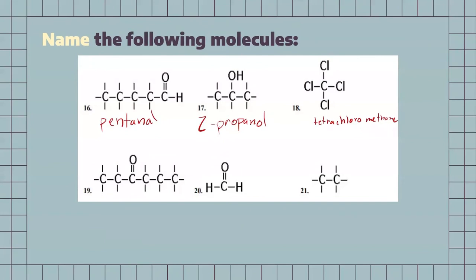Our next one, we have to count how many carbons we have: 1, 2, 3, 4, 5, 6. So, now we have to figure out on which carbon our ketone is on. So, it's going to be on 1, 2, 3. So, we're going to call this one 3-hexanone. Now, you might have started the counting on this side and called it 4-hexanone. But remember, we're going to start our counting on the side closest to where that group is. So, 1, 2, 3 — it's 3-hexanone.